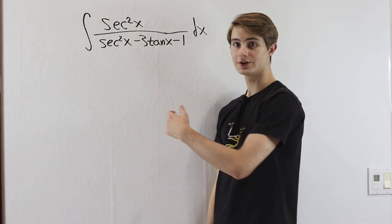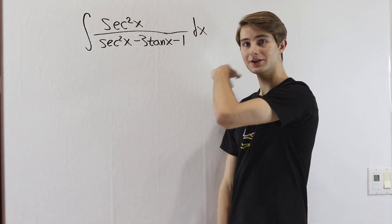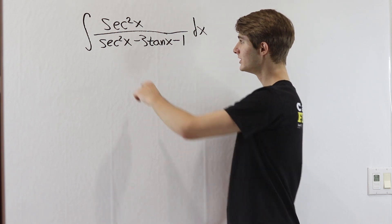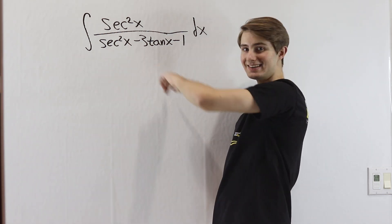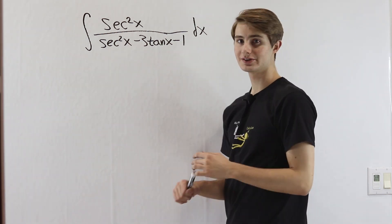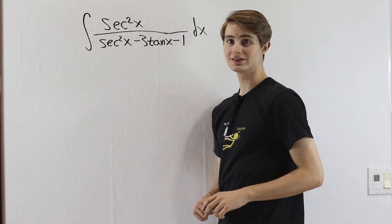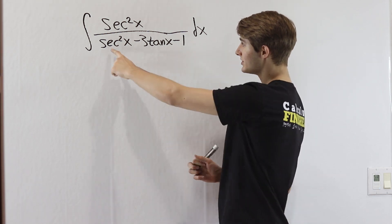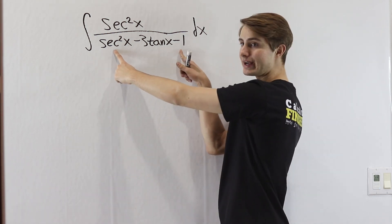Now the first thing I see when I look at this integral is this denominator that looks really ugly. We're not going to be able to get very far with this integral with a secant squared x and a tangent x in the bottom. So we want to start thinking about how we can simplify this denominator using some trig identities. First thing I see here is a secant squared x and then a minus 1.